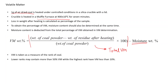Volatile matter is taken as a measure of the rank of coal. Lower ranks may contain more than 50 percent volatile matter, while anthracites may have less than 10 percent volatile matter. This could include different gases of nitrogen, sulfur, etc. Do not forget to deduct the moisture content from the volatile matter obtained in the volatile matter determination process.